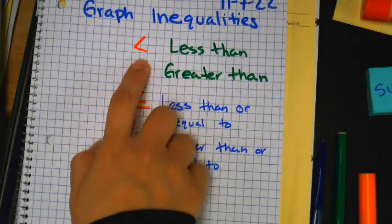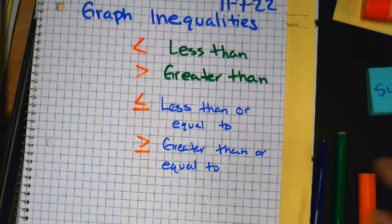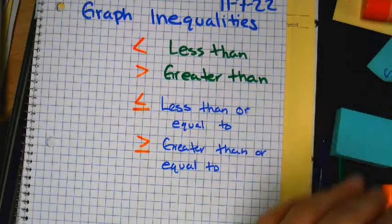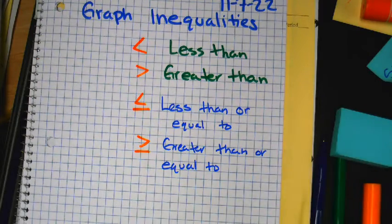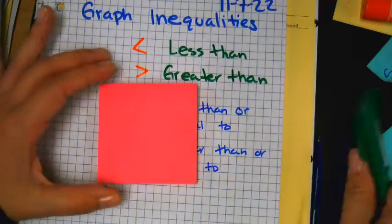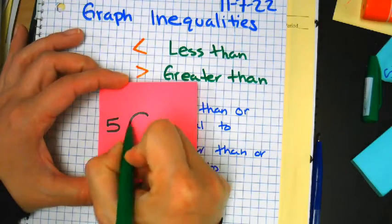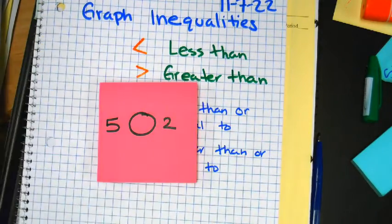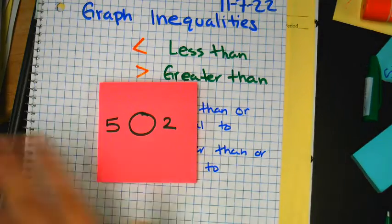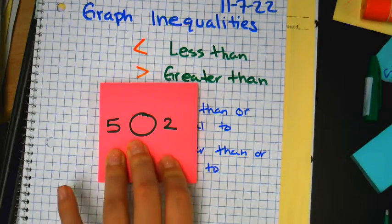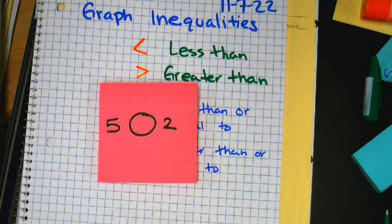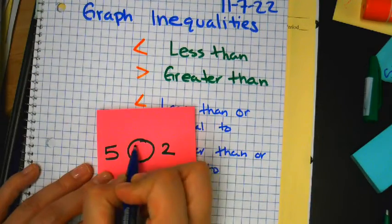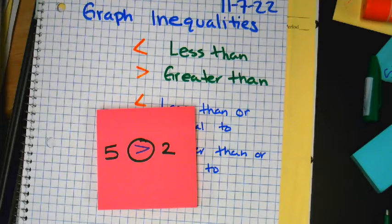Does anybody remember where these symbols come from? Elementary school, right? In elementary school, you had literally the alligator. The alligator eats the bigger number, right? So which symbol goes in there? Greater than. So it's the same kind of idea now in seventh grade.